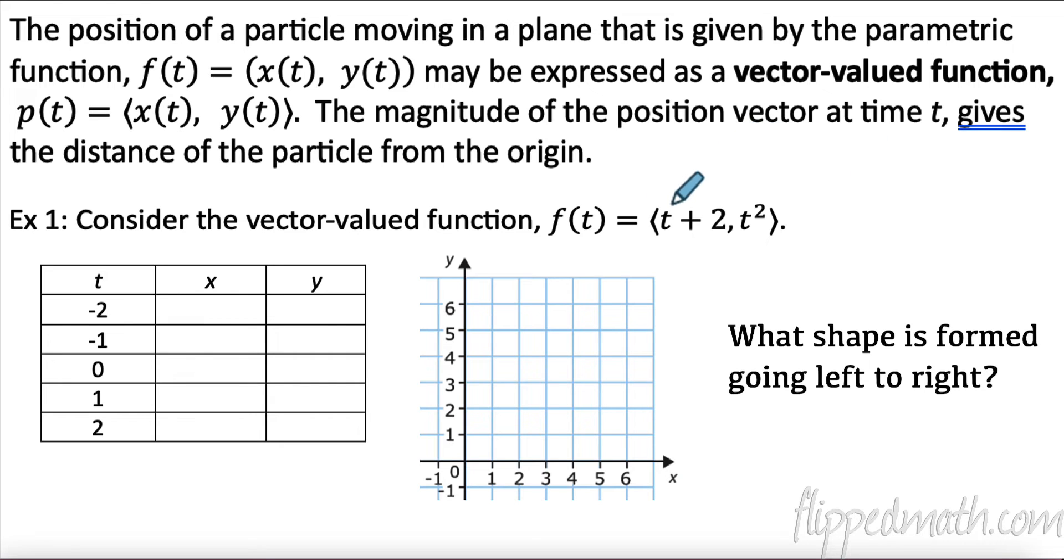Consider the vector-valued function where the x component function is t plus 2 and the y component function is t squared. For t equals negative 2, I would plug in negative 2, I'd get 0 for my x and 4 for my y value. Now, it's very common to think of this as a coordinate, but it's not. It is a vector, so I'm going 0 and up 4. I want you to remember that. The location is the endpoint - that's where the particle is. If I took the magnitude of this, 0 squared plus 4 squared is 16, the square root of 16 would be 4. So that would be the distance the particle is from the origin.